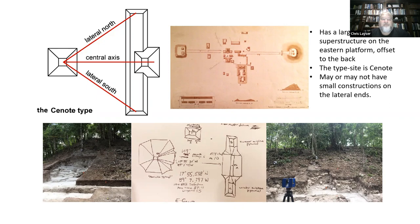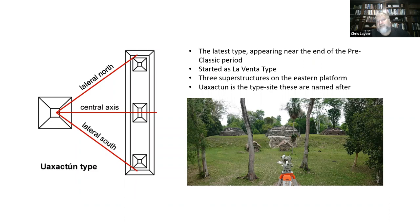The latest type is the Washaktun type, with its type site at Washaktun as already discussed. This is categorized by the western pyramid and three pyramids constructed on the north-south running platform.